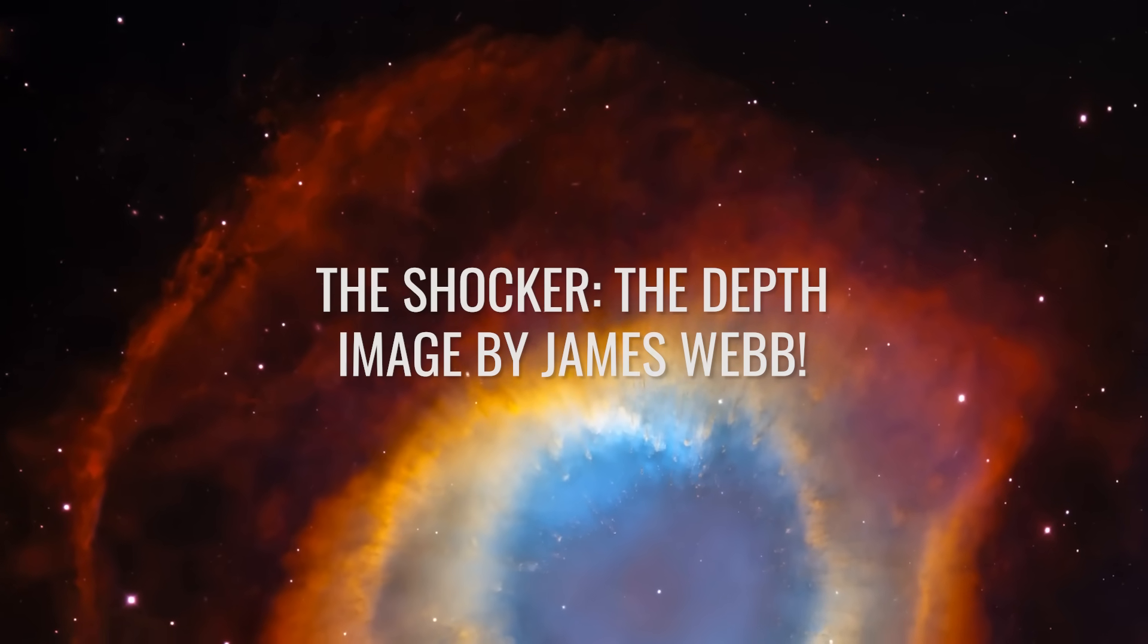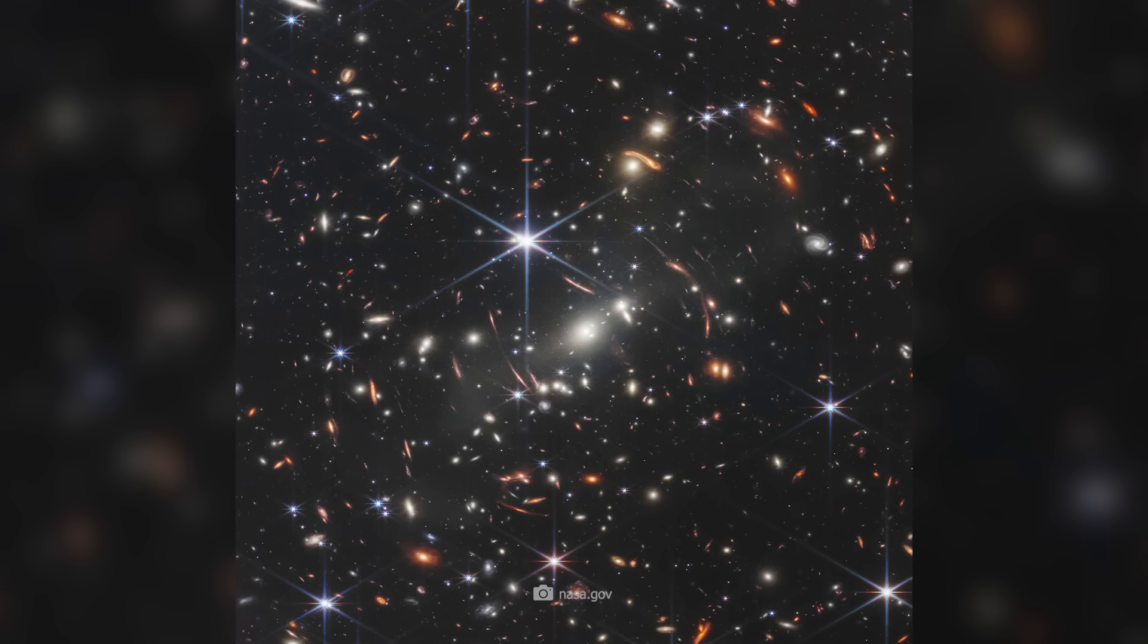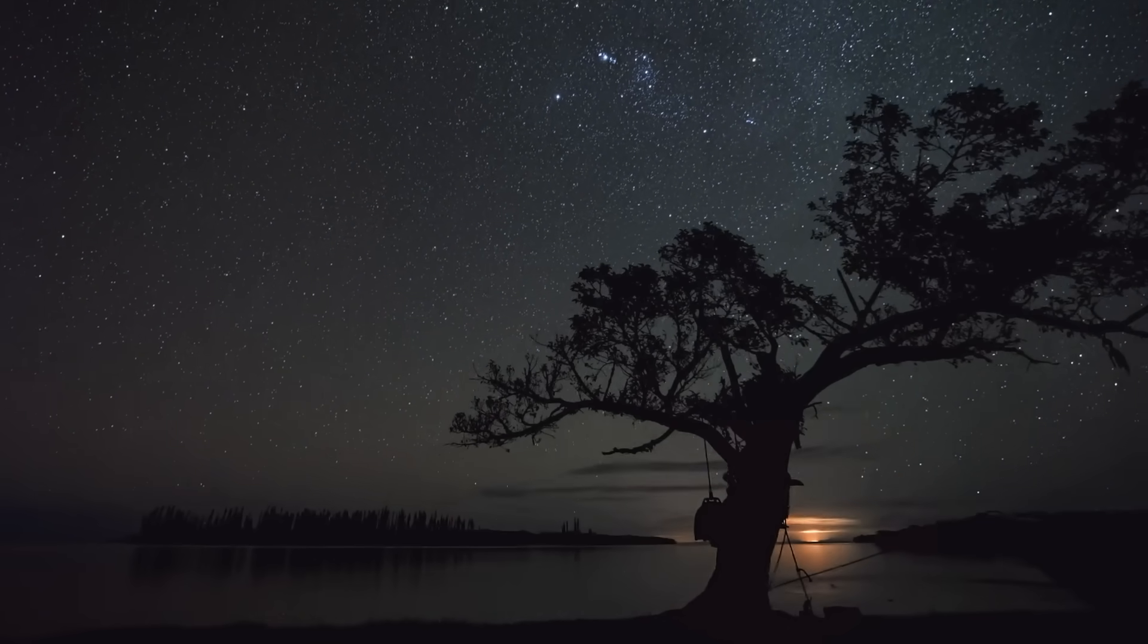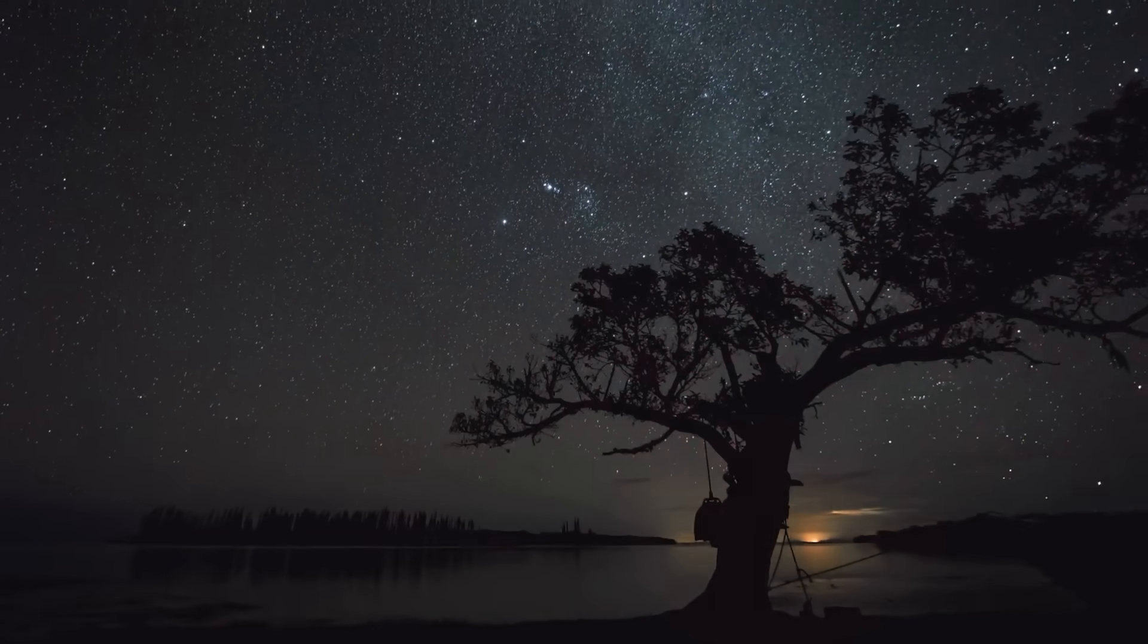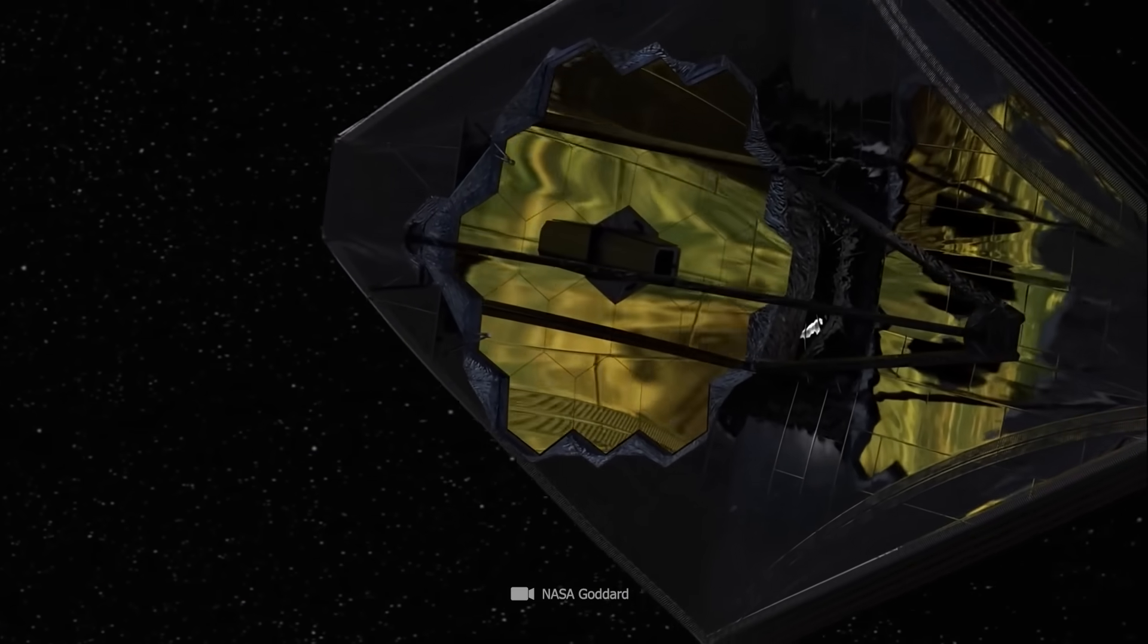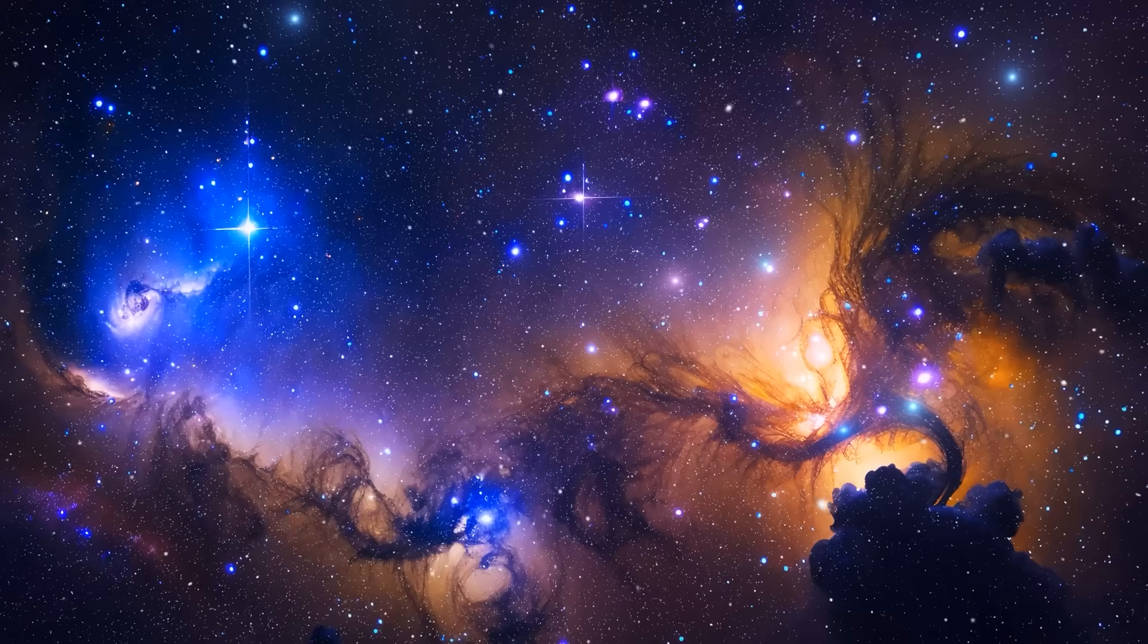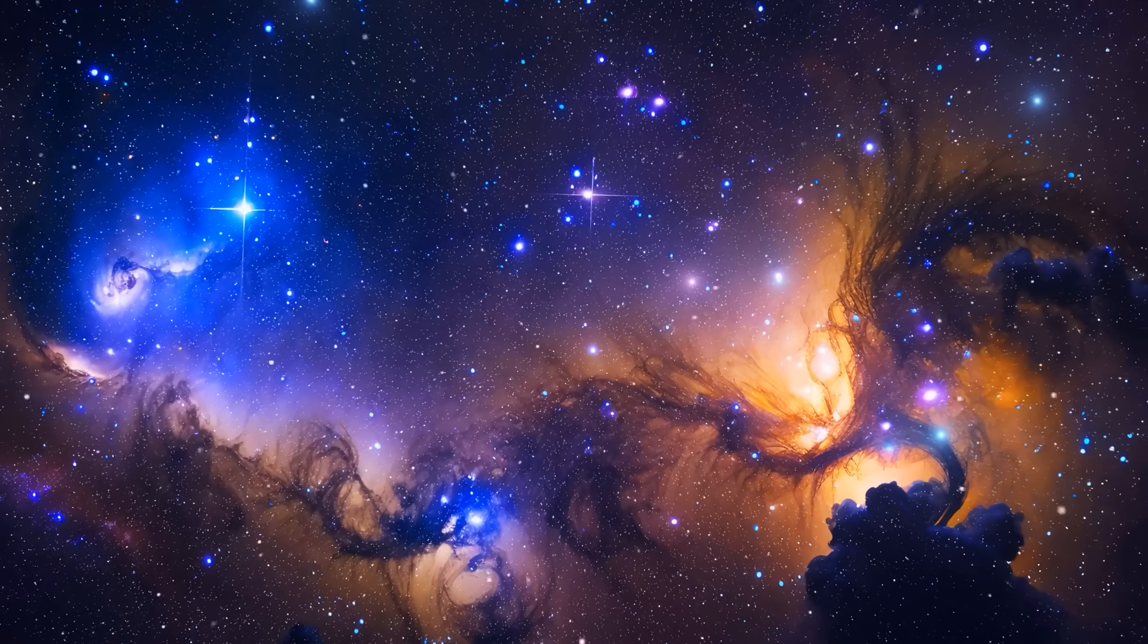The shocker: the depth image of James Webb. This image has fascinated and shocked astronomers. It actually only shows a few galaxies, but on closer inspection, the image turned out to be a window to the truth about the past of the universe. But why is James Webb's deep image so revolutionary for our understanding of the universe? It's quite simple. This image is impressive not only because of its beauty and detail, but also because of the deep insights it offers us into the earliest epochs of the cosmos.